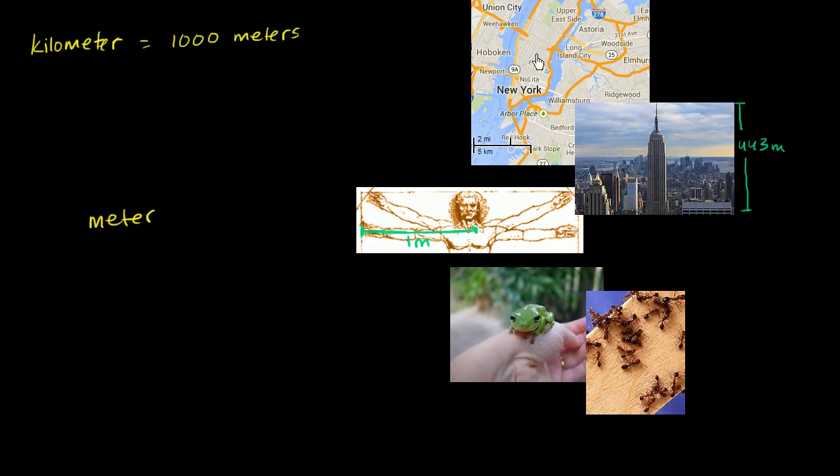And to once again get a sense of that, this right over here is a map of New York City. And right over here they give us the scale. This distance right over here is five kilometers. So five kilometers, just to give us a sense of things, and they wrote km for short. So five km, this lowercase k, lowercase m is the shorthand for kilometers. This would be equal to, well, if one kilometer is 1,000 meters, five kilometers is going to be five times as many.